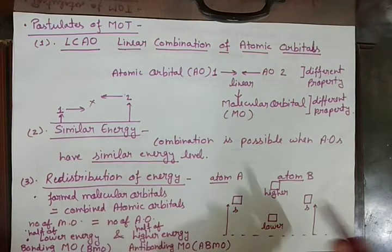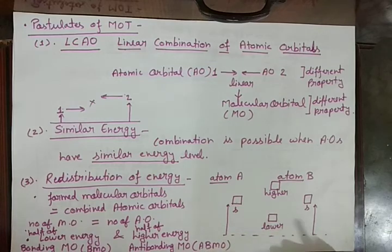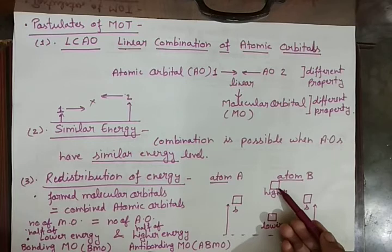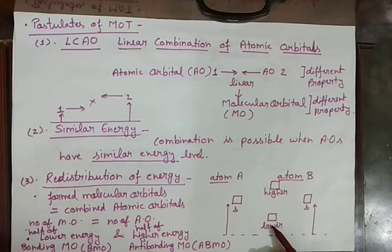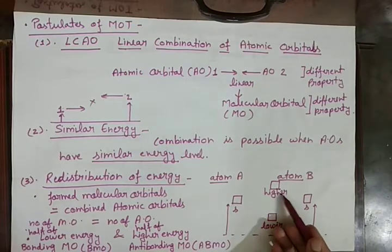That means, however many orbitals combine, that many molecular orbitals will be formed. Half of those orbitals will be lower in energy and half will be higher in energy. Lower energy orbitals are called bonding molecular orbitals and higher energy orbitals are called anti-bonding molecular orbitals.